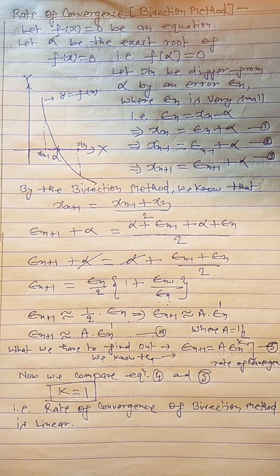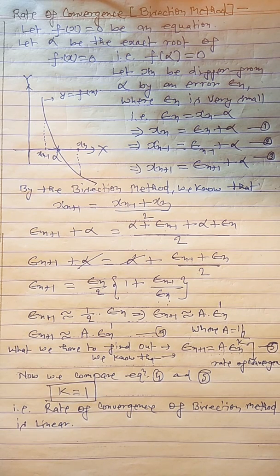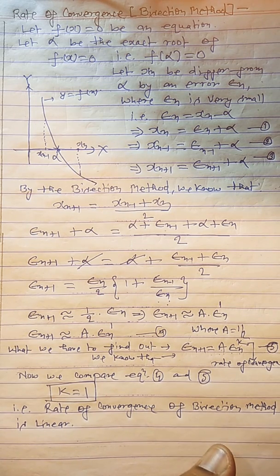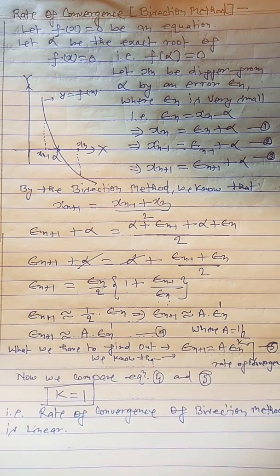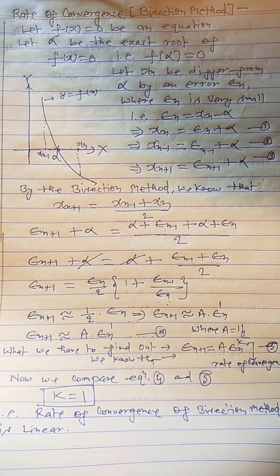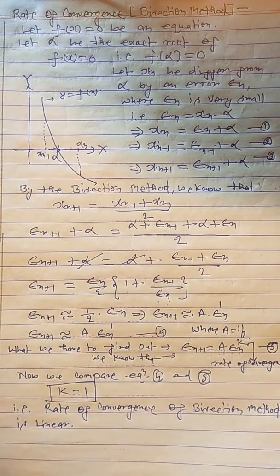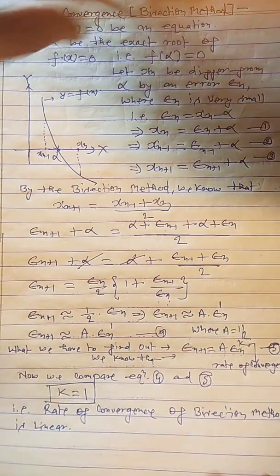I think all of you have understood the rate of convergence for the bisection method. If you have any queries, you can write down your queries in the comment box.